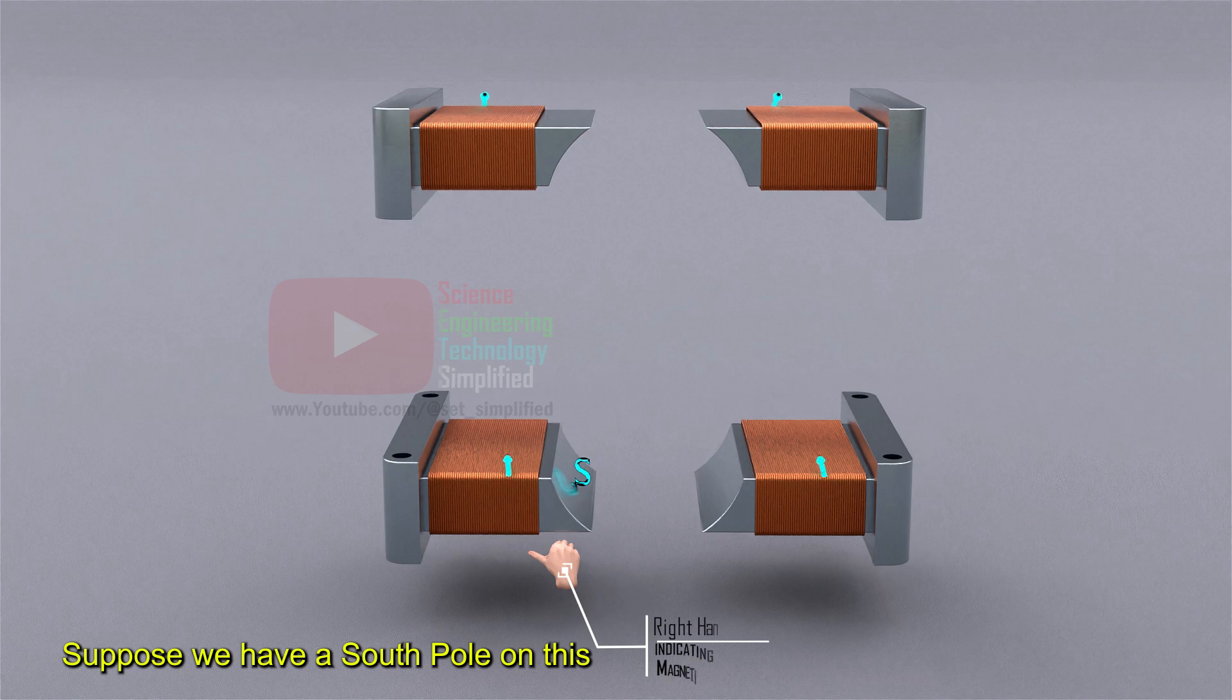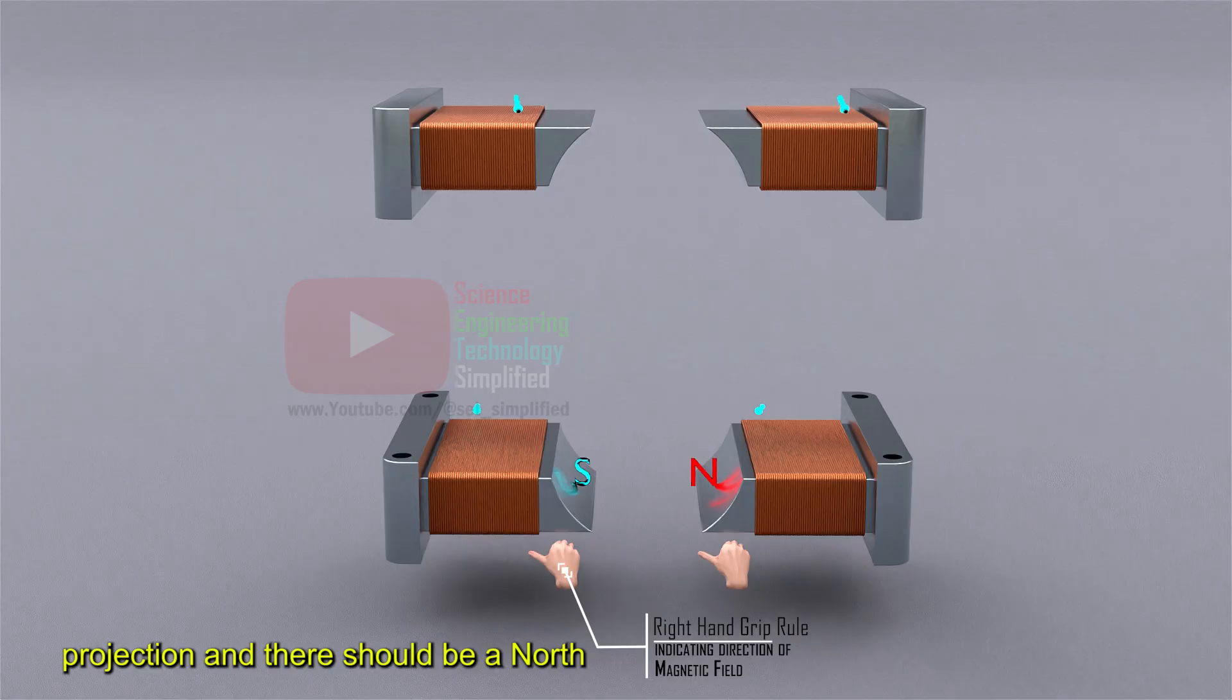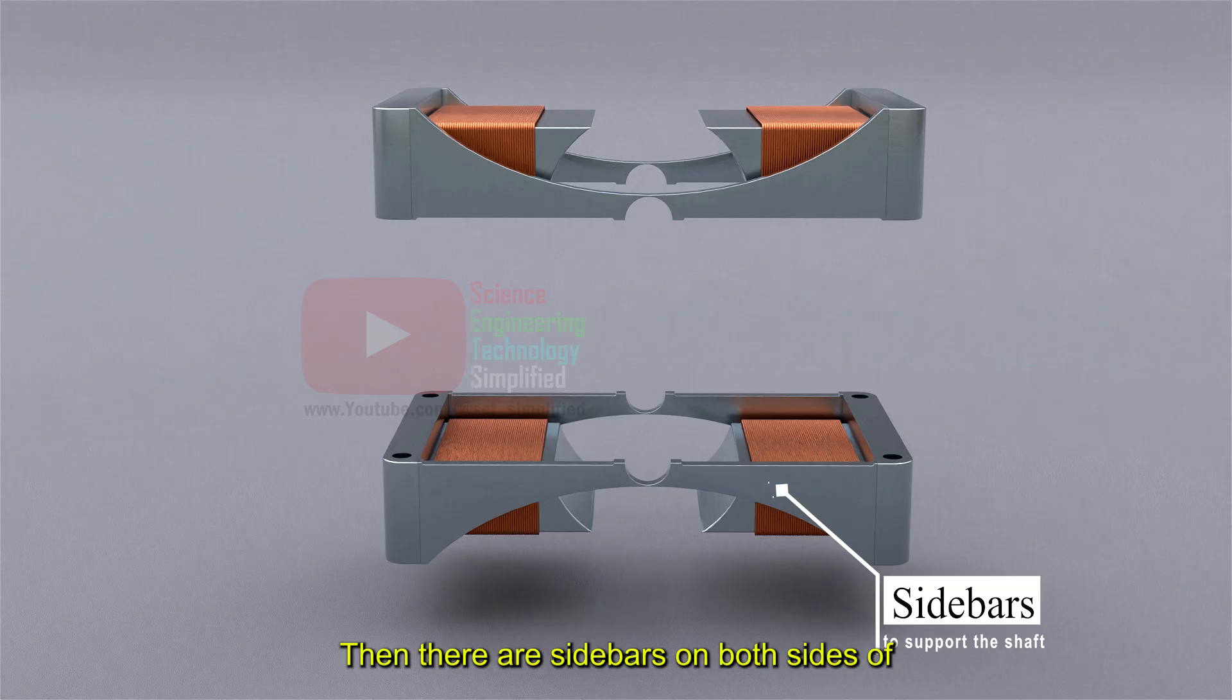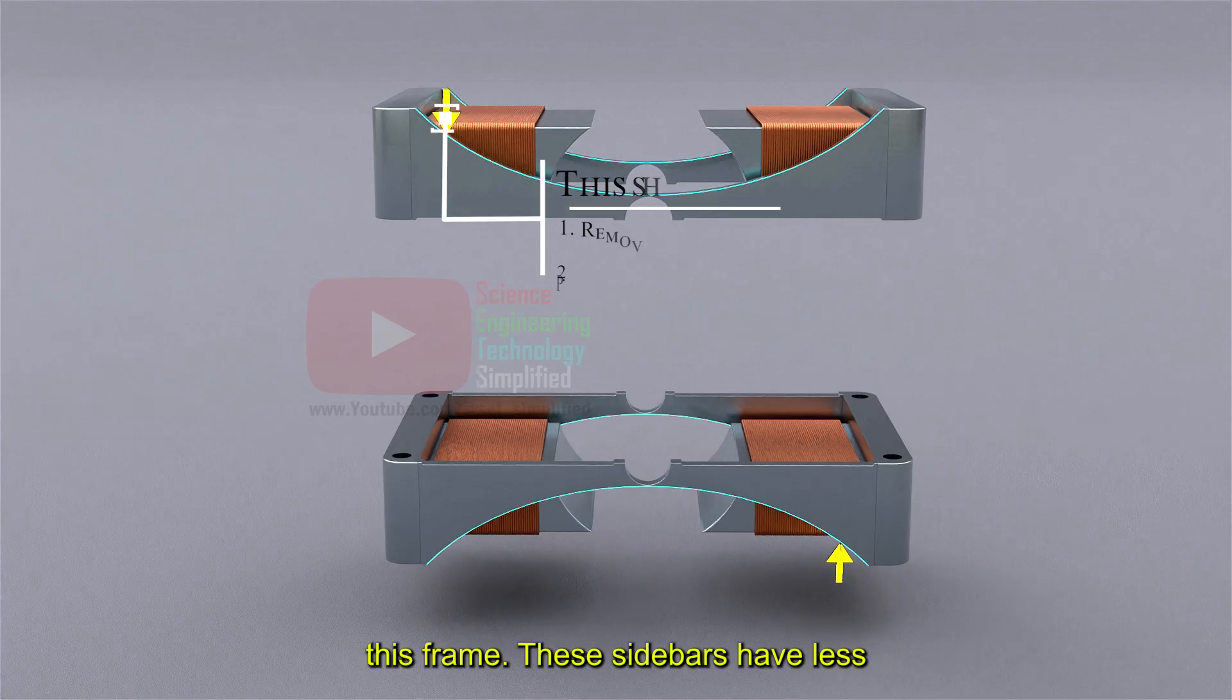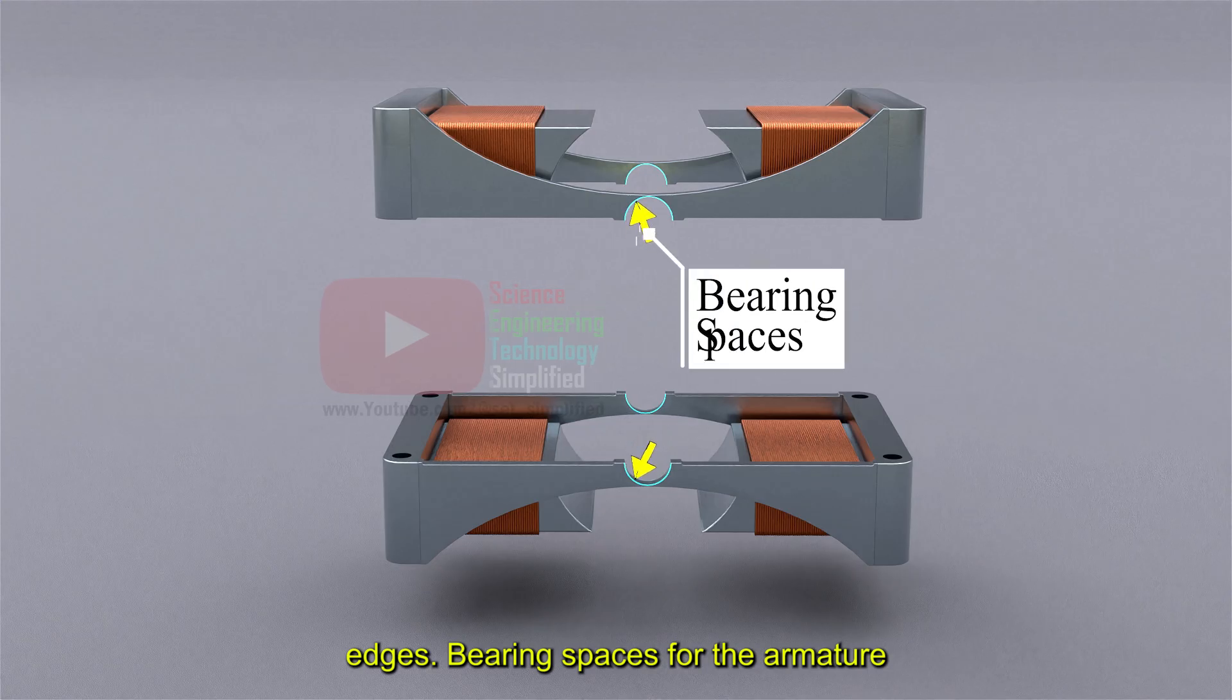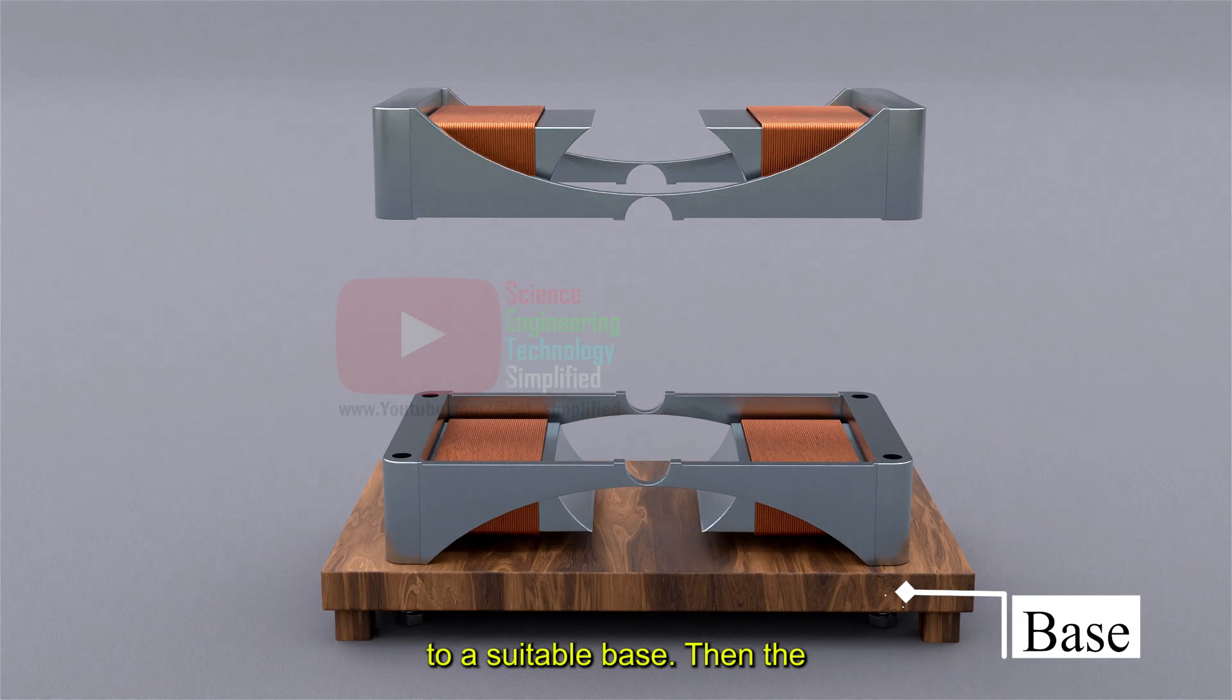Suppose we have a south pole on this lower left projection, then there should be a north pole on the lower right projection, and there should be a north pole on this upper left projection. Then there are sidebars on both sides of this frame. These sidebars have less width at the center compared to the edges. Bearing spaces for the armature shaft are carved in these edges. The lower part of this casting is secured to a suitable base.